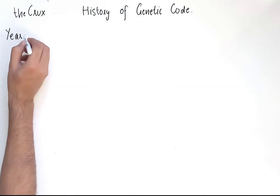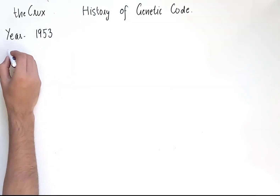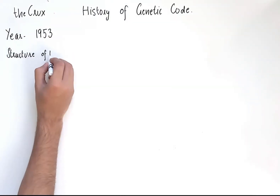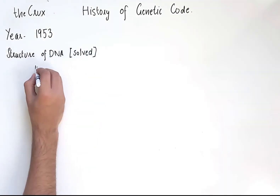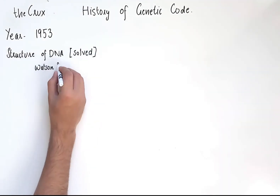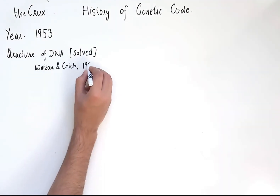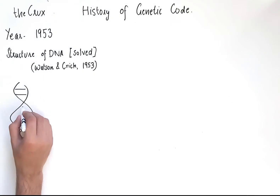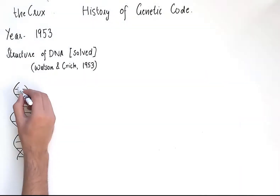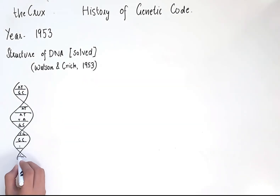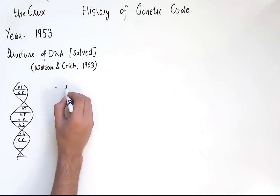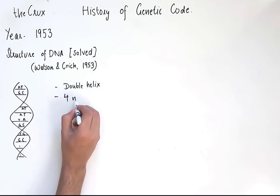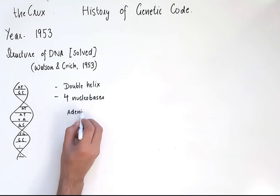It is 1953, and the structure of DNA has just been discovered by Watson and Crick. DNA has a double helix structure and is made up of four nucleobases: adenine, thymine, cytosine, and guanine.